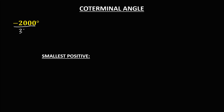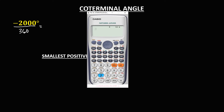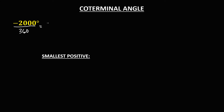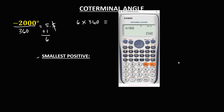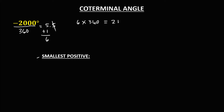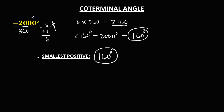For negative 2000 degrees, we divide by 360 to find the number of rotations: 2000 divided by 360 equals 5.5. Since we need the smallest positive coterminal angle, we round up and add 1, giving us 6. Then 6 times 360 equals 2160. So 2160 minus 2000 equals 160 degrees. Therefore, the smallest positive coterminal angle is 160 degrees.